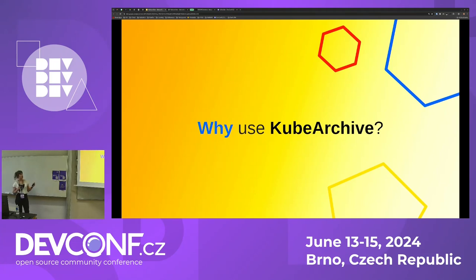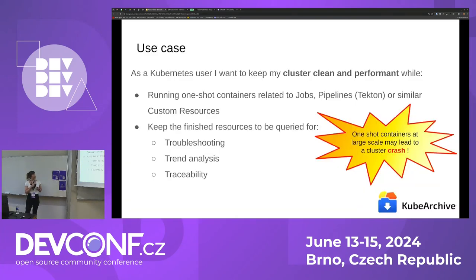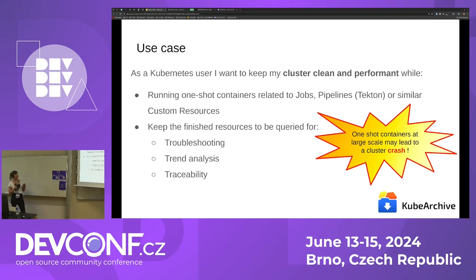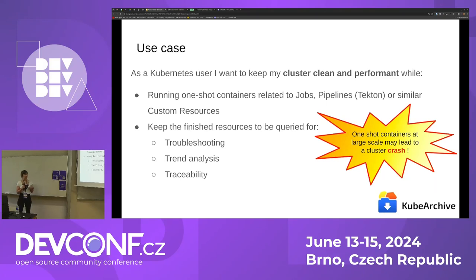Let's start with the use case. What should we consider when using kubearchive in our Kubernetes cluster? The main use case is that we are running one-shot containers in our Kubernetes cluster — containers related to jobs, Tekton pipelines, or other pipelines, or similar custom resources. If we run these at a large scale, they may pile up inside the Kubernetes database, etcd, and this might cause problems like performance issues, and they might lead to our cluster crashing.